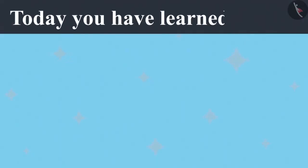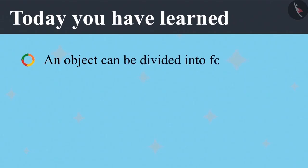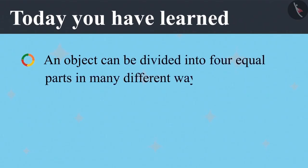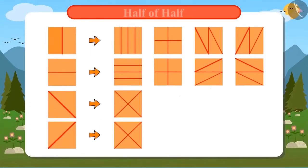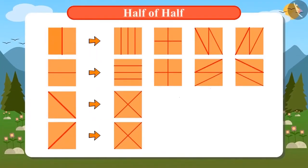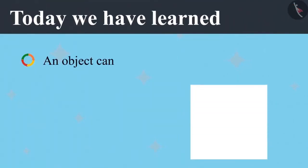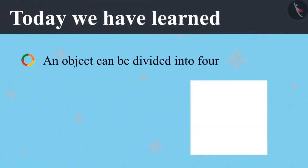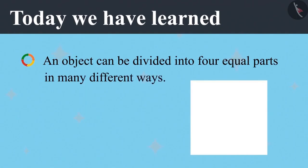Today you have learned an object can be divided into four equal parts in many different ways. Vandana divided a square-shaped figure into eight one-fourth parts. You can also take a square-shaped paper and observe the number of ways you can find to divide it into four equal parts.